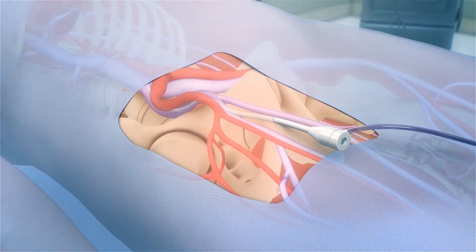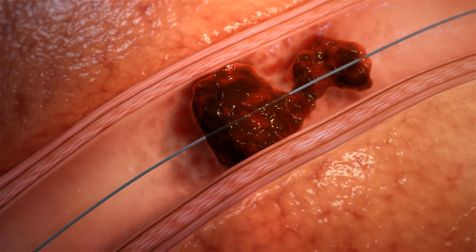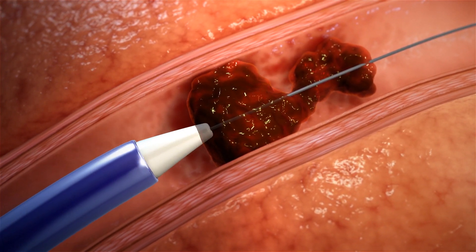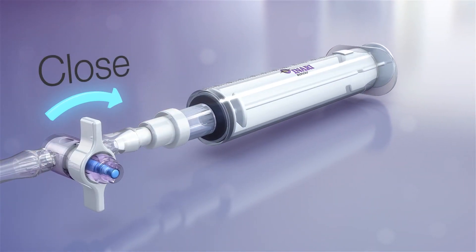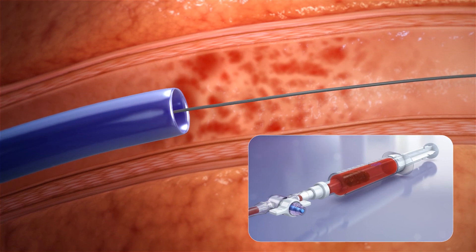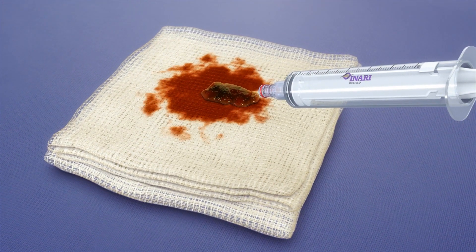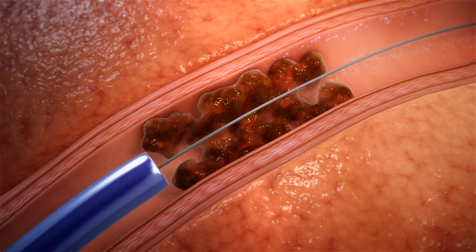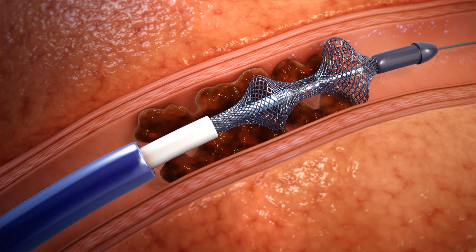For the retrieval of blood clot from a PE in the lung, we utilize a system called the Inari FlowTriever system. This device is specially designed to navigate into the lung vessels to engage, disrupt, and extract blood clots from the lungs. The procedure begins with accessing the patient's vein, and the FlowTriever catheter is then advanced over the guide wire and positioned just proximal to the clot. Using a large syringe, a negative pressure vacuum is generated and the clot is retrieved through the large-bore catheter. If there is residual clot, a catheter with nitinol discs — which can engage the clot and liberate it from the vessel wall — is utilized.